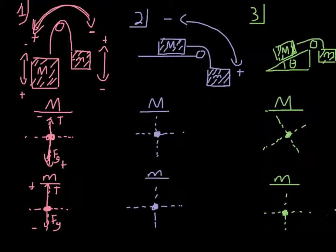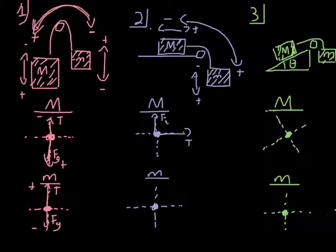Based on that, I choose my positives and negatives for the free-body diagram. For the little mass, down is positive and up is negative. For the big mass, right is positive and left is negative. For the big mass's free-body diagram: tension goes to the right, normal force goes up since it's on a surface, gravity goes down since we're on Earth, and if there's friction, it goes opposite to the expected direction of acceleration — so friction goes to the left.